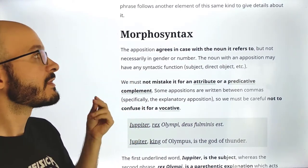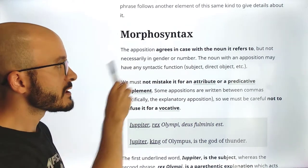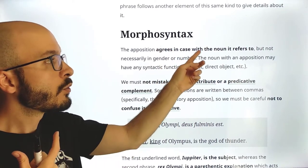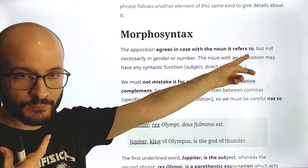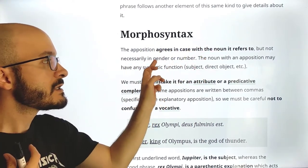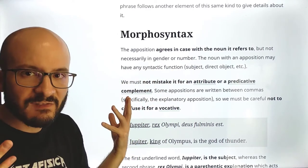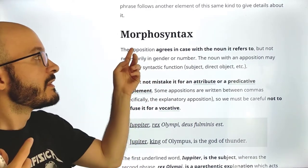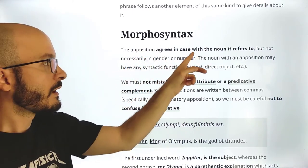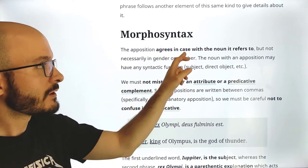Let's study the morphosyntax of the apposition. The apposition agrees in case with the noun it refers to. So case agreement is obligatory, but not necessarily in gender or number. Usually — I would say 95% of the times — the apposition agrees in all three: case, gender, and number, but only the case is obligatory.